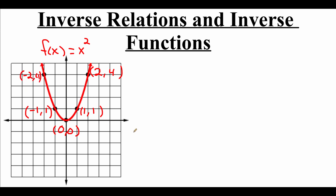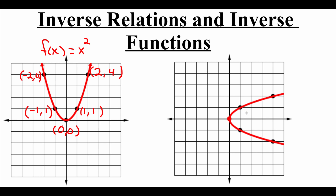But if we think about an inverse relation for this function, what we would do is flip-flop the ordered pairs for each one of those points. So instead of the point 2, 4, it would be the point 4, 2. When we do that, we end up getting a picture that looks something like this. So 0, 0 stays at 0, 0 because when you reverse the order on those x's and y's it stays the same. Same thing with 1, 1. But that 2, 4 goes out to the point 4, 2. On the left-hand side, the negative 1, 1 point goes to 1, negative 1, and the negative 2, 4 point goes to 4, negative 2.